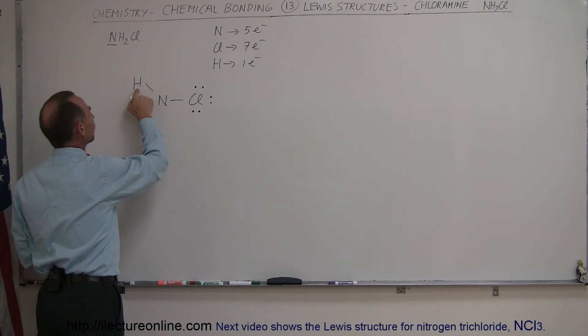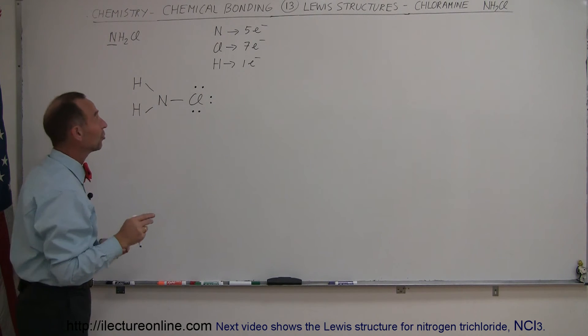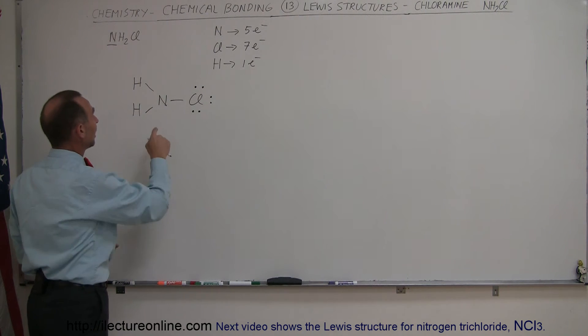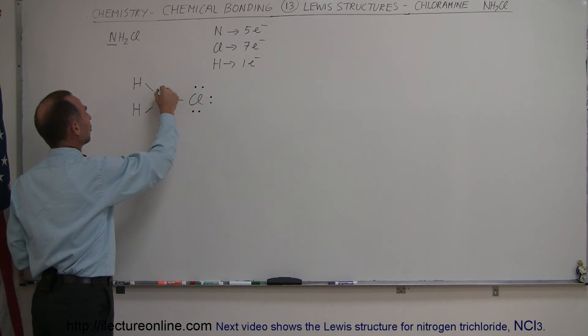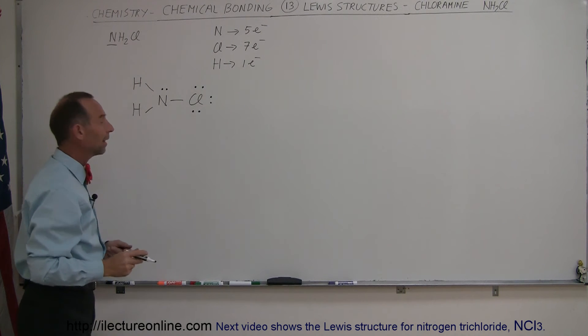Hydrogen uses its single electron to make a bond with nitrogen. Now, notice, nitrogen started with five electrons. It already used three to make these bonds, that means it has two more, and so there's another pair of electrons belonging to nitrogen like that. So nitrogen now has the correct number of electrons.